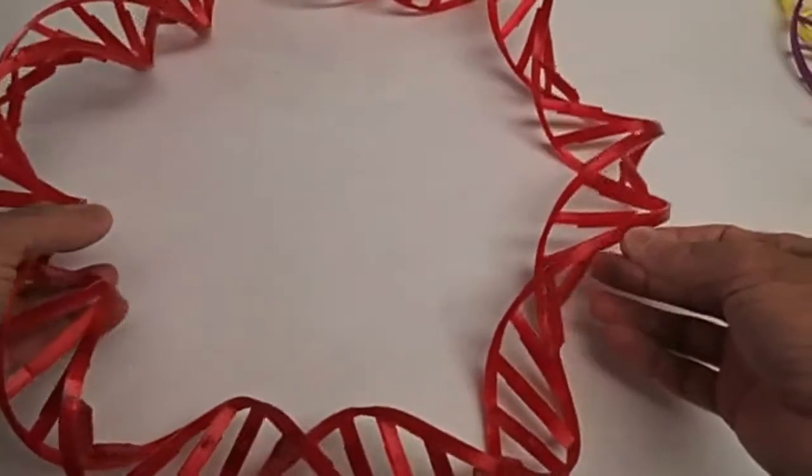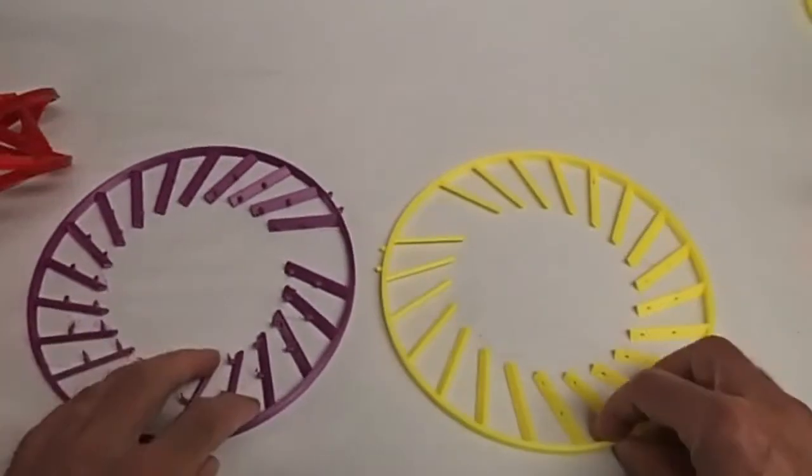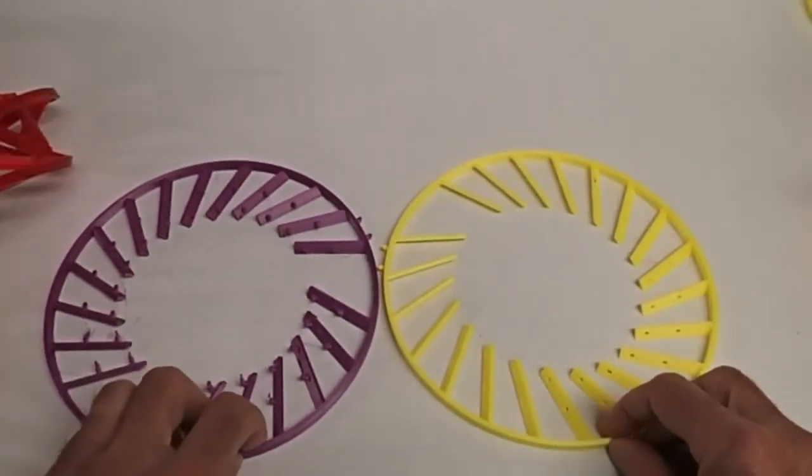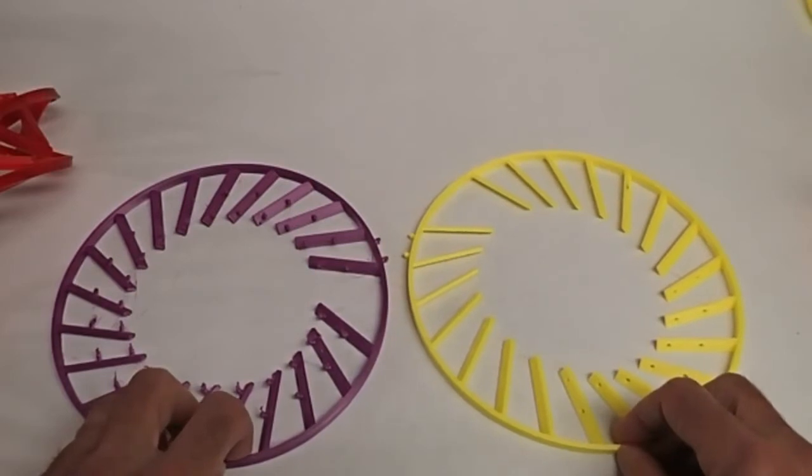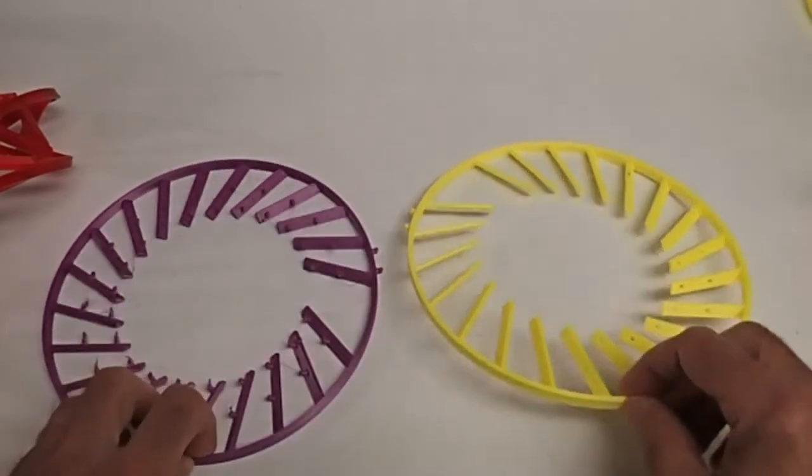So I'm going forward with this in production of a purple and a supposed to be gold, but it's a yellow backbone. So one backbone will be purple, one backbone will be yellow.